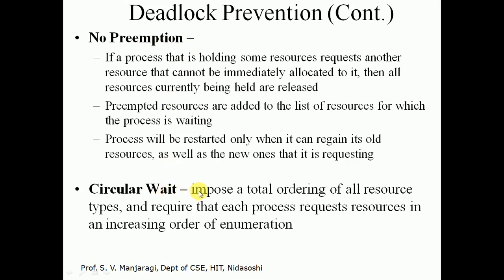The fourth condition to prevent is circular wait. To prevent it, we impose a total ordering of all resource types and require each process to request resources in increasing order of enumeration. By arranging resources in order and allowing allocation only in increasing order, circular wait can be avoided. This is the end of deadlock part 1. Thank you.